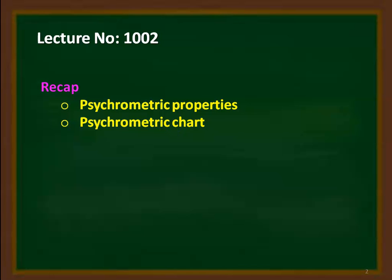We recap from the previous lecture — the first lecture on psychrometrics. We discussed the psychrometric properties and studied the psychrometric chart. Using the psychrometric chart, you can find out the psychrometric properties. In this lecture, we will be discussing the various psychrometric processes involved in air conditioning calculations.